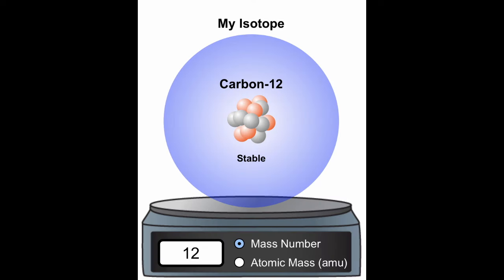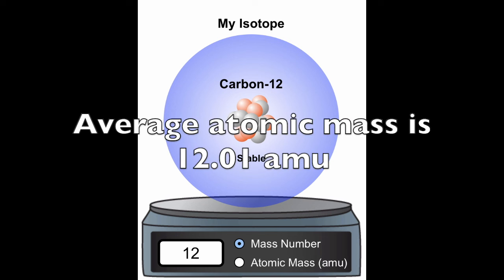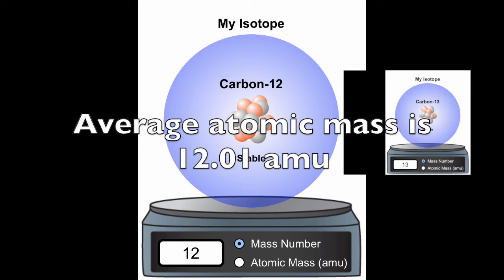So, because carbon-12 is most common in nature, and because the other isotopes of carbon are present in very small amounts, the average atomic mass is 12.01 amu. Mostly carbon-12 with a little bit of the other isotopes.